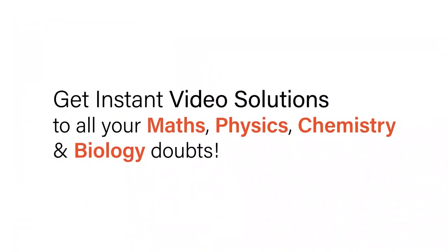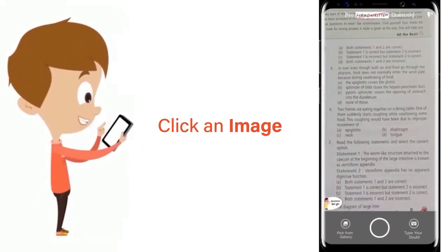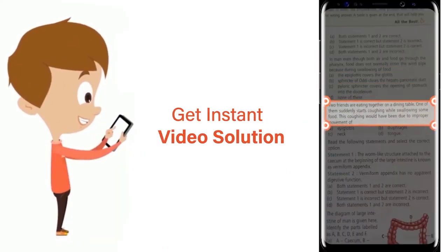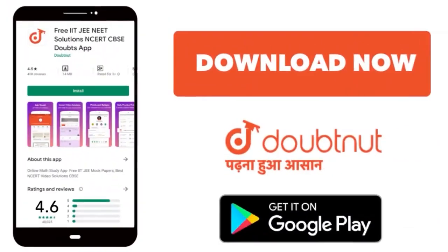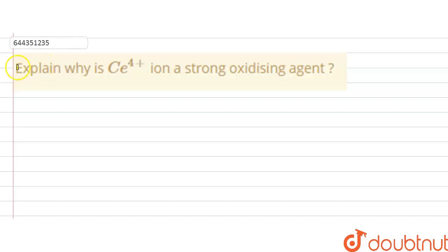With Doubtnut, get instant video solutions to all your maths, physics, chemistry and biology doubts. Just click the image of the question, drop the question and get instant video solution. Download Doubtnut app today. Hello students, the question is: explain why is cerium 4+ ion a strong oxidizing agent.